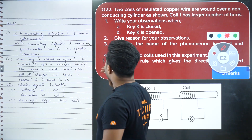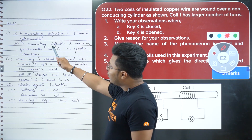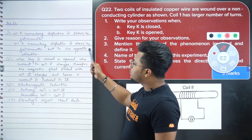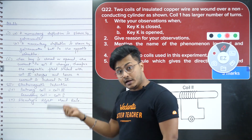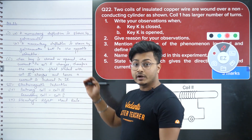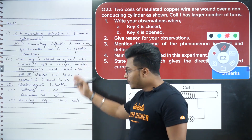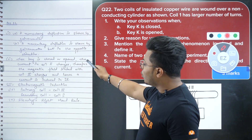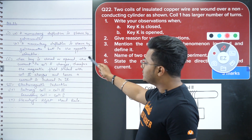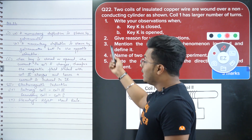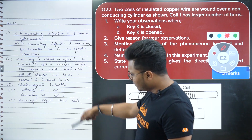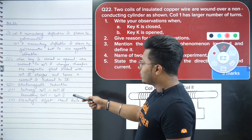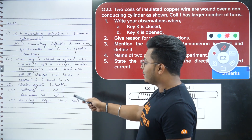The student's answers are: when key K is closed, a momentary deflection is shown by the galvanometer. When key K is open, a momentary deflection is shown by the galvanometer but in the opposite direction. For the reason: when key K is closed or opened, the current in coil one changes; therefore, the magnetic field linked with coil two changes and hence a current is induced in it. Number three: electromagnetic induction. Number four: primary coil is coil two, secondary coil is coil one. Number five: Fleming's right-hand rule.